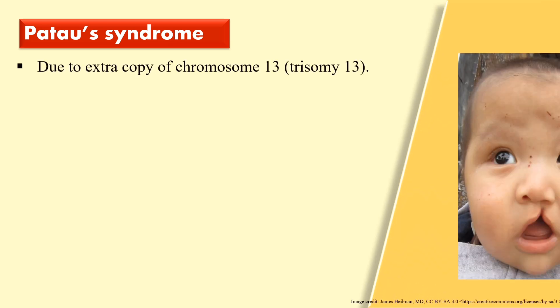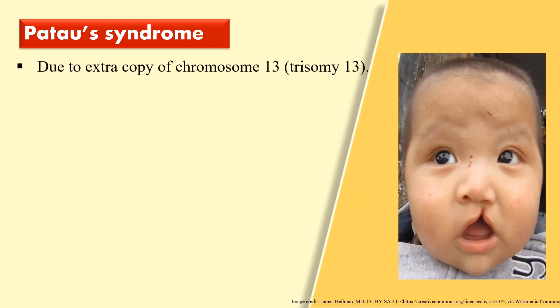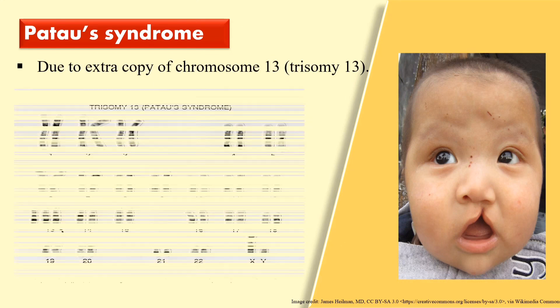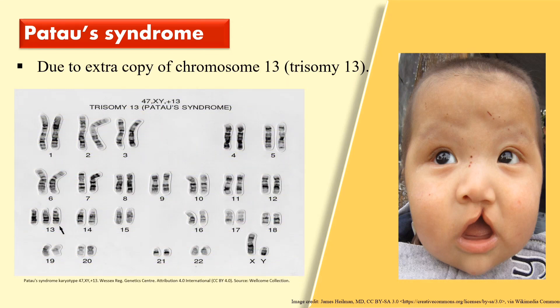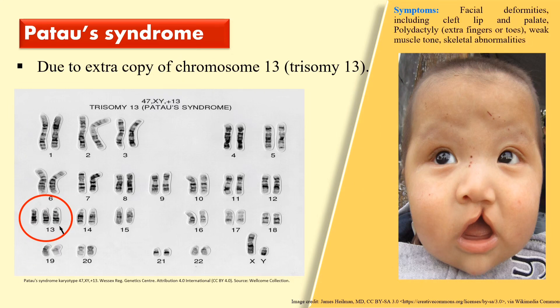The next syndrome is Patau syndrome, and this is due to the presence of an extra copy of the 13th chromosome. If you look into the karyotype, you can see the 13th chromosome is present in triplicate — there is an extra copy. The symptoms include facial deformities including cleft lip and palate, and polydactyly — extra fingers or extra toes.